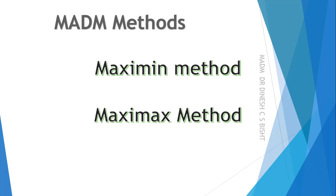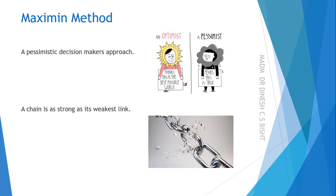Hello, in today's lecture we will discuss MADM methods: the Maximin method and the Maxi-Max method. First we will discuss the Maximin method. The Maximin method is based on a pessimistic decision maker's approach. A pessimist always thinks of loss first before making any decision. This method is based on the theory that a chain is as strong as its weakest link, so we target the weakest link first and then proceed further.